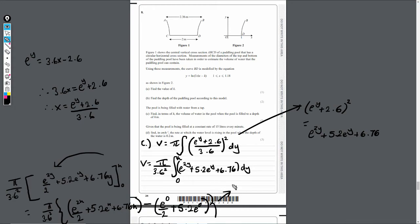So I've already done this on my calculator. But if you perform all this and write out and simplify it, what you'll actually get is π / 3.6² times e^(2h) / 2 plus 5.2e^h plus 6.76h, and then I'll have my minus 5.7 at the very end.